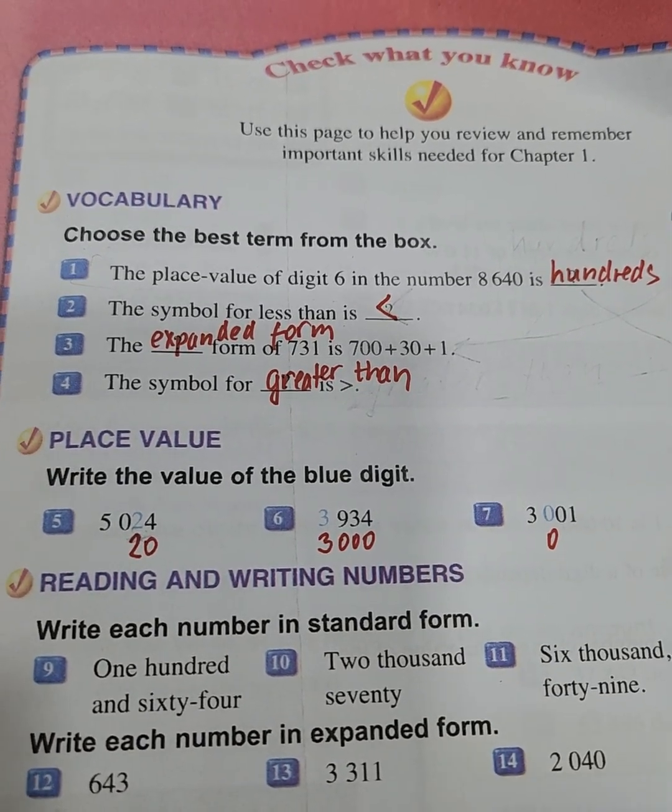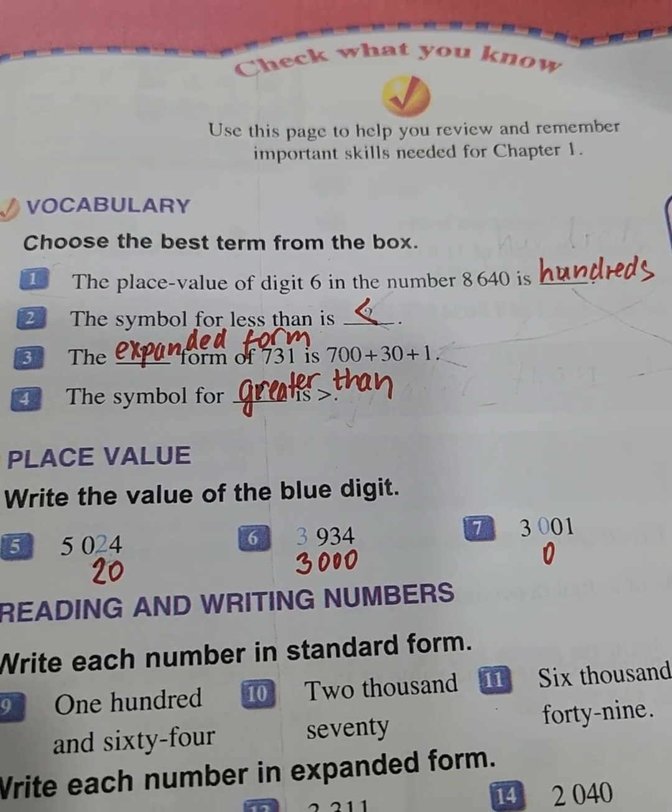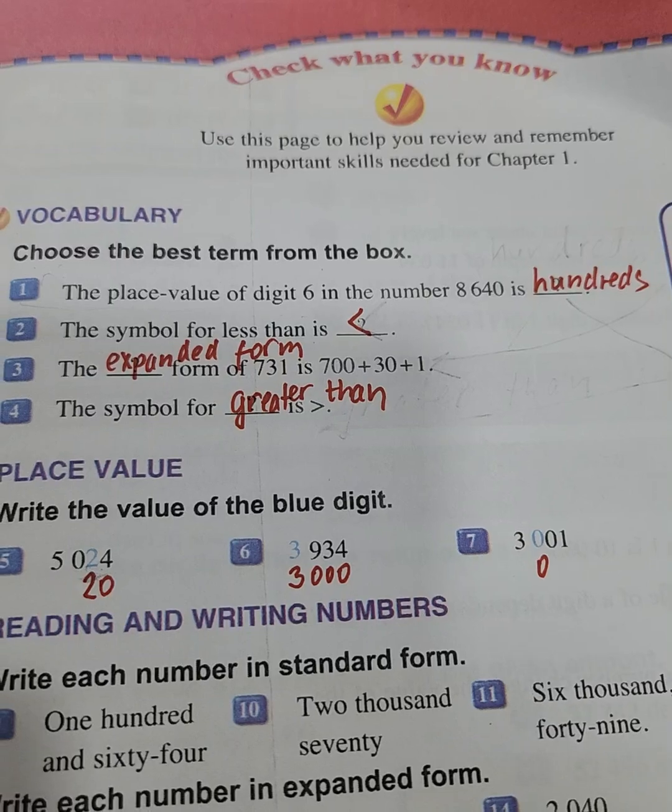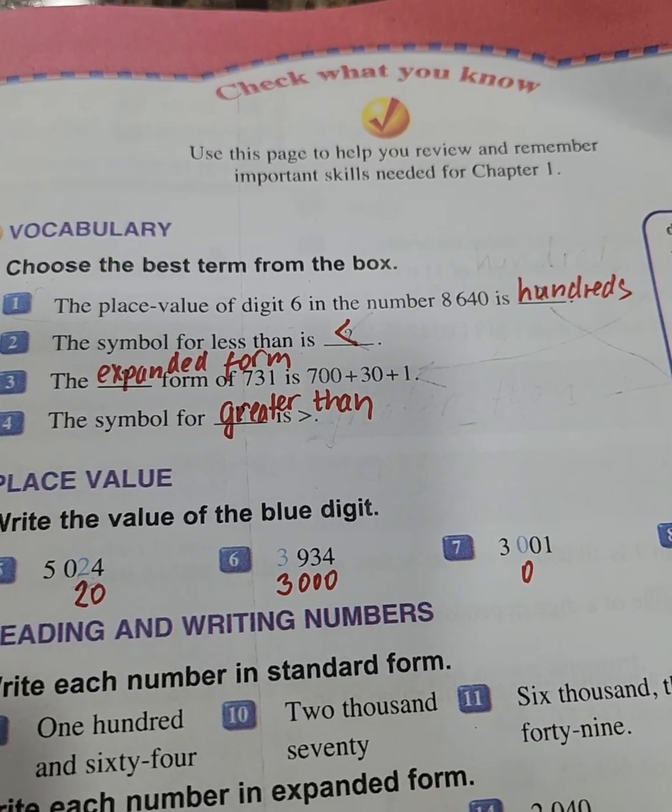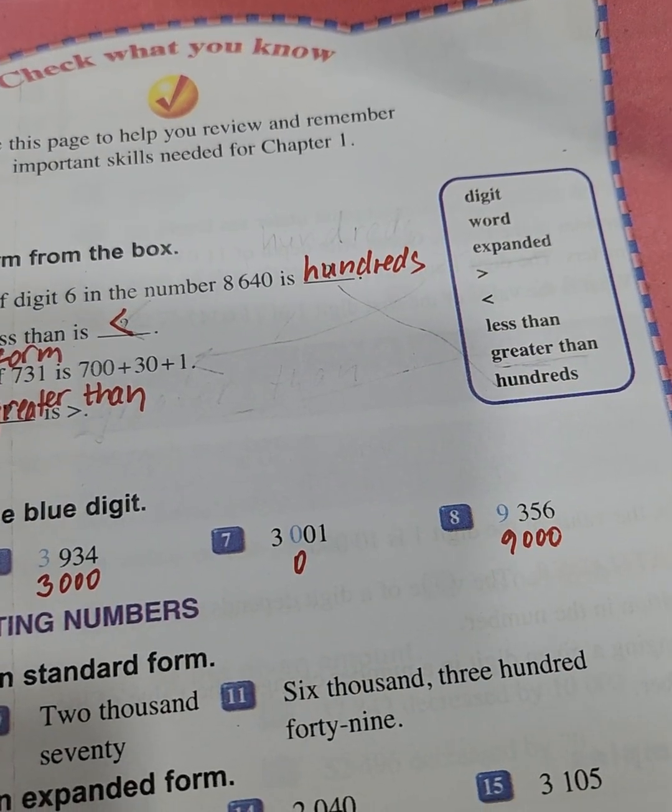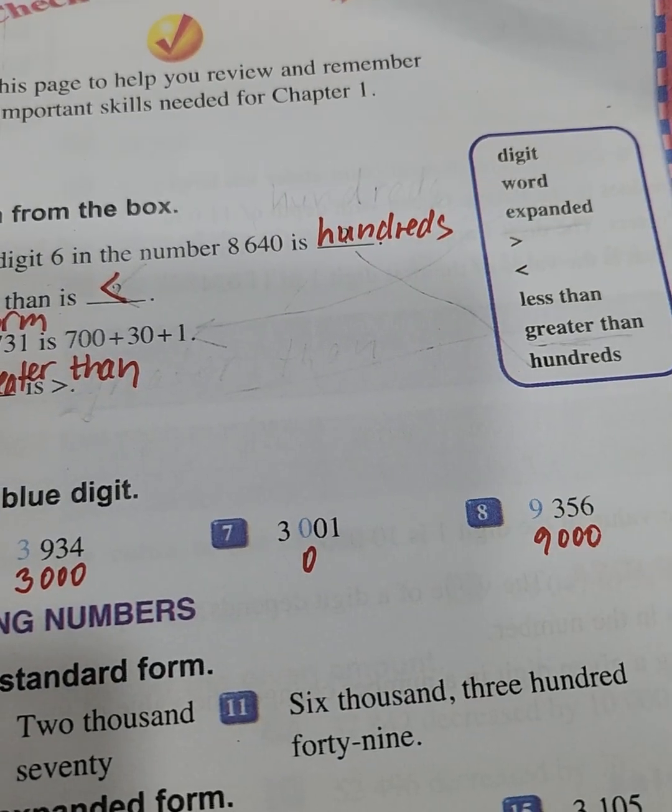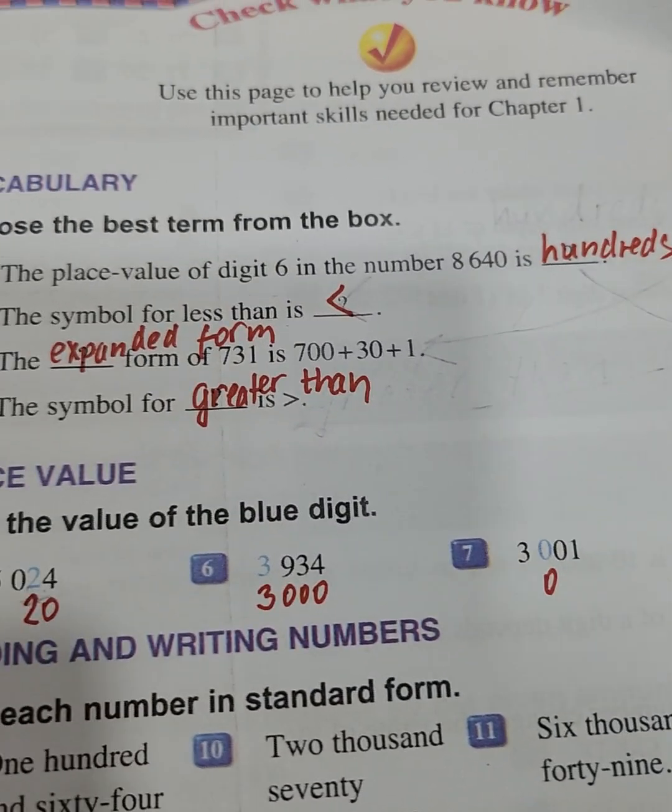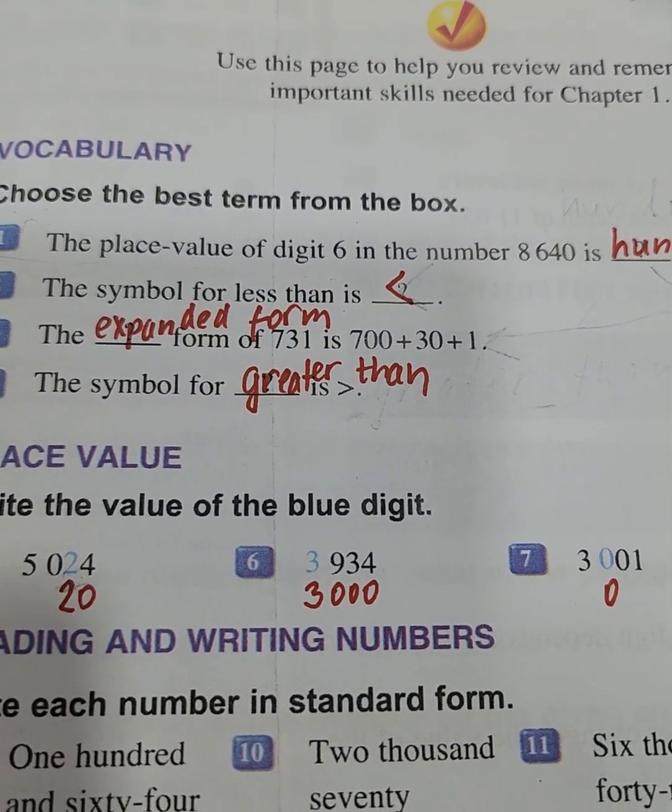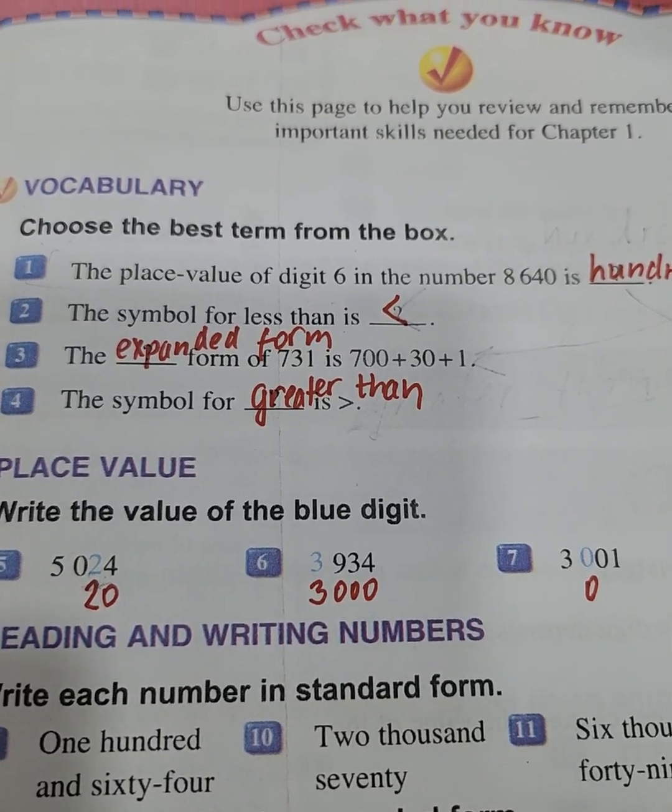We will start with vocabulary on page number three. We must choose the place value of digit 6 in the number 8640, which is hundreds. The symbol for less than can be chosen from this box. We have the symbol for less than is this.